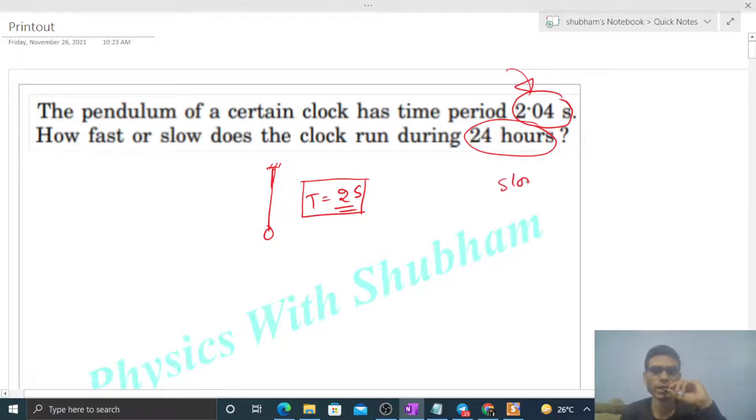So it will run slow. Now, how much time will it lag in 24 hours? You can see in 2 seconds, it goes behind by 0.04 seconds, because it is taking 0.04 more seconds to complete that oscillation. Actually, in the problem, it should happen in 2 seconds, but it's taking more time, so it goes behind by this much time in 2 seconds.